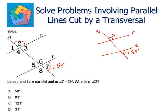Angle 2, as we can see, is corresponding to angle 6. This is angle 6. Both are lying above the parallel line and are on the same side of the transversal. So we can say the measure of angle 2 is equal to the measure of angle 6 by corresponding angles are congruent.